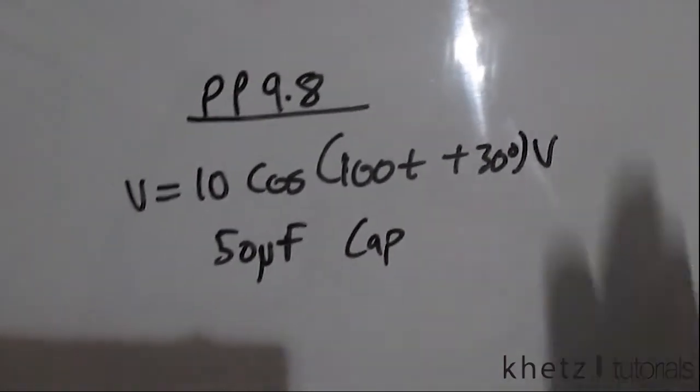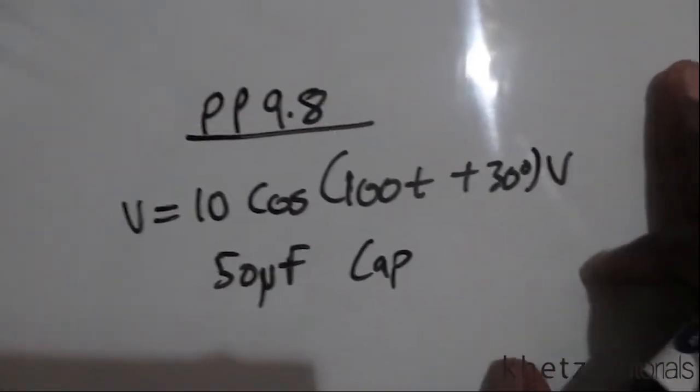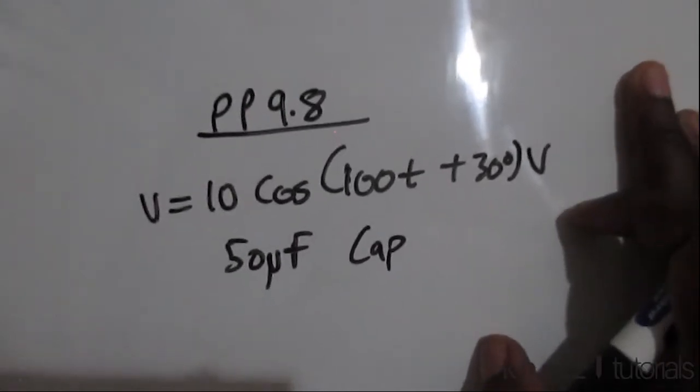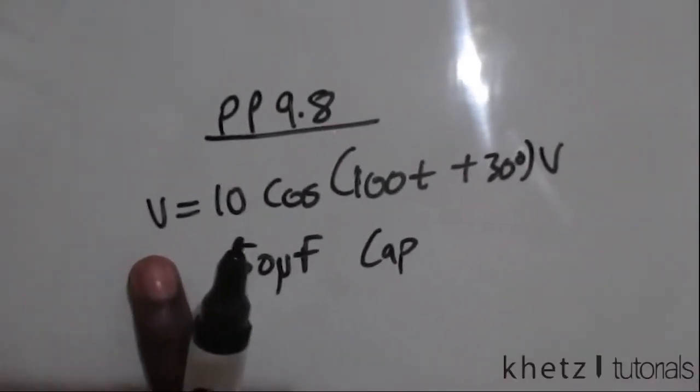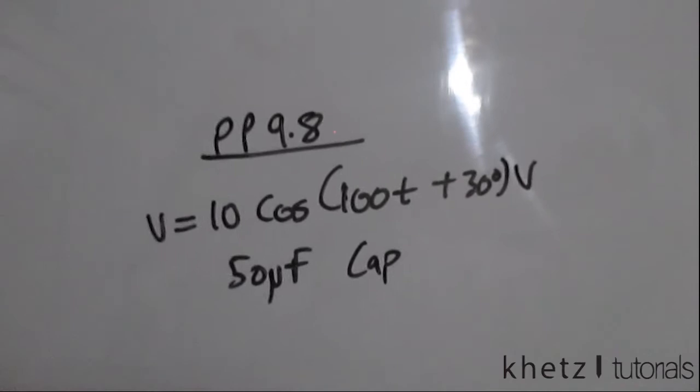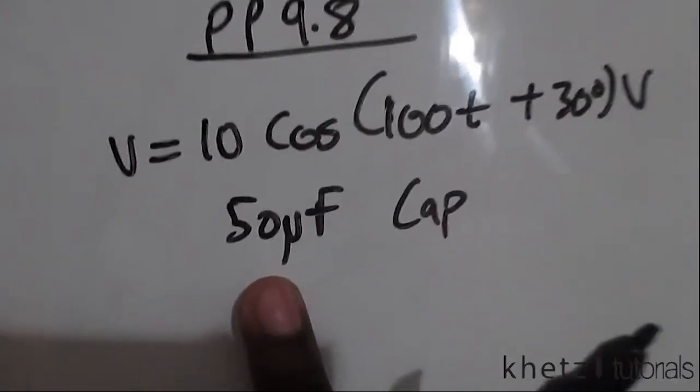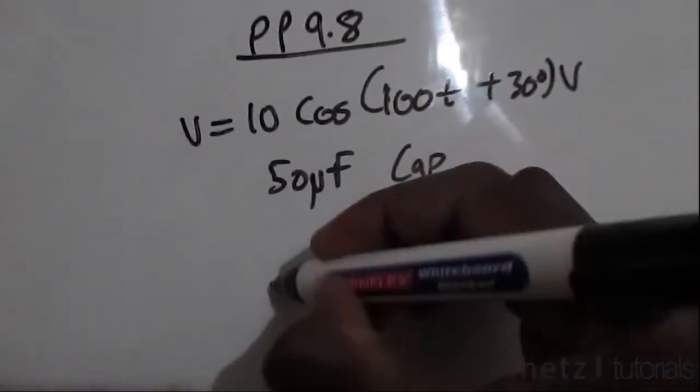Welcome to Khetz tutorials. In this video I'll be covering practice problem 9.8. Given this voltage which is applied to a capacitor of value 50 microfarads, we are asked to find the current.